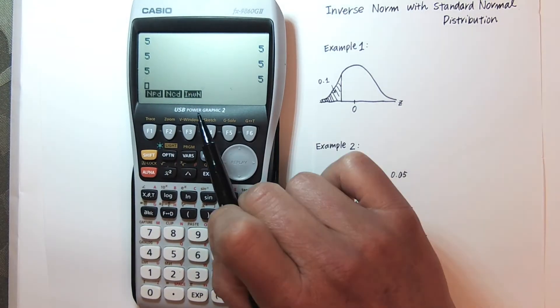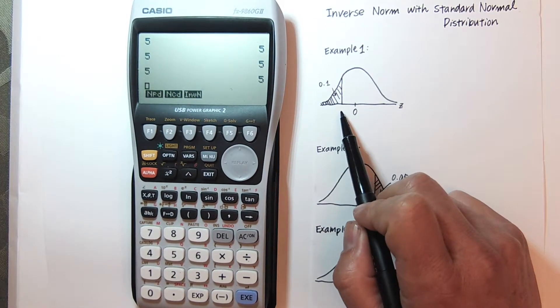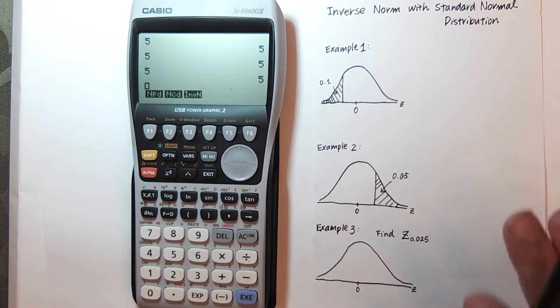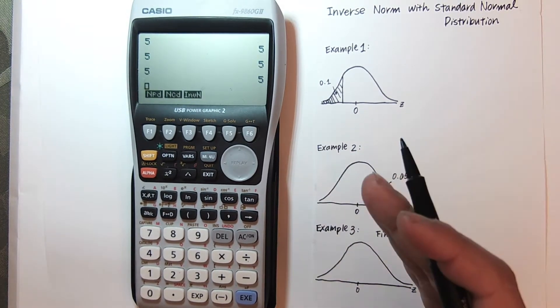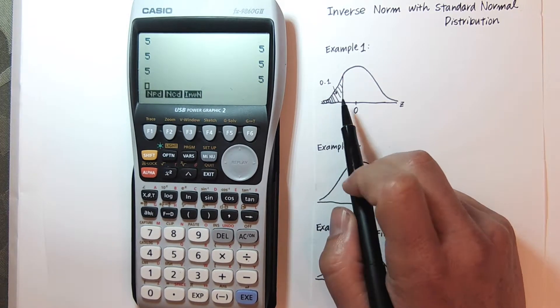And here's my inverse norm. You use inverse norm when you have an area and you want to find this Z value on the Z axis here. Now remember, your calculator only knows how to find all of the area to the left. So very nicely for this Z value, the area to the left is 0.1.